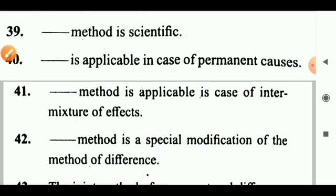Question 52: Any branch of knowledge that studies a particular ideal is called a dash science. Answer: Normative science. Question 53: Importance is an dash source of knowledge. Answer: Indirect source of knowledge. Question 54: The method of residues is a method of dash. Answer: Deduction. Question 55: Method of agreement is a method of dash but not a proof. Answer: Discovery.